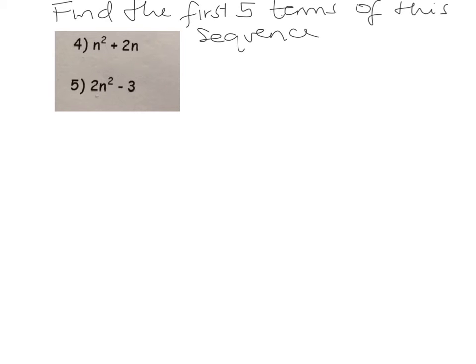So if I write that out, I'll write it out again, it's n squared plus 2n.